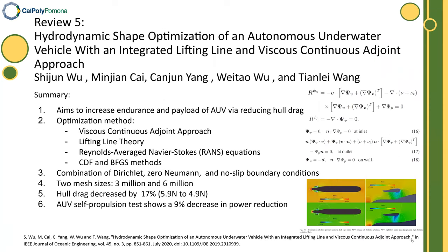The central focus of the fifth paper is to increase endurance and payload capacity of an AUV by reducing hull drag. An AUV shape optimization method comprising two components is employed: CA Formulation and Lifting Line Theory. Additionally, 3D compressible steady-state RANS equations as well as CDF and BFGS methods are utilized. Solving the optimization problem with the appropriate solver tools, a 17% decrease in hull drag is obtained.